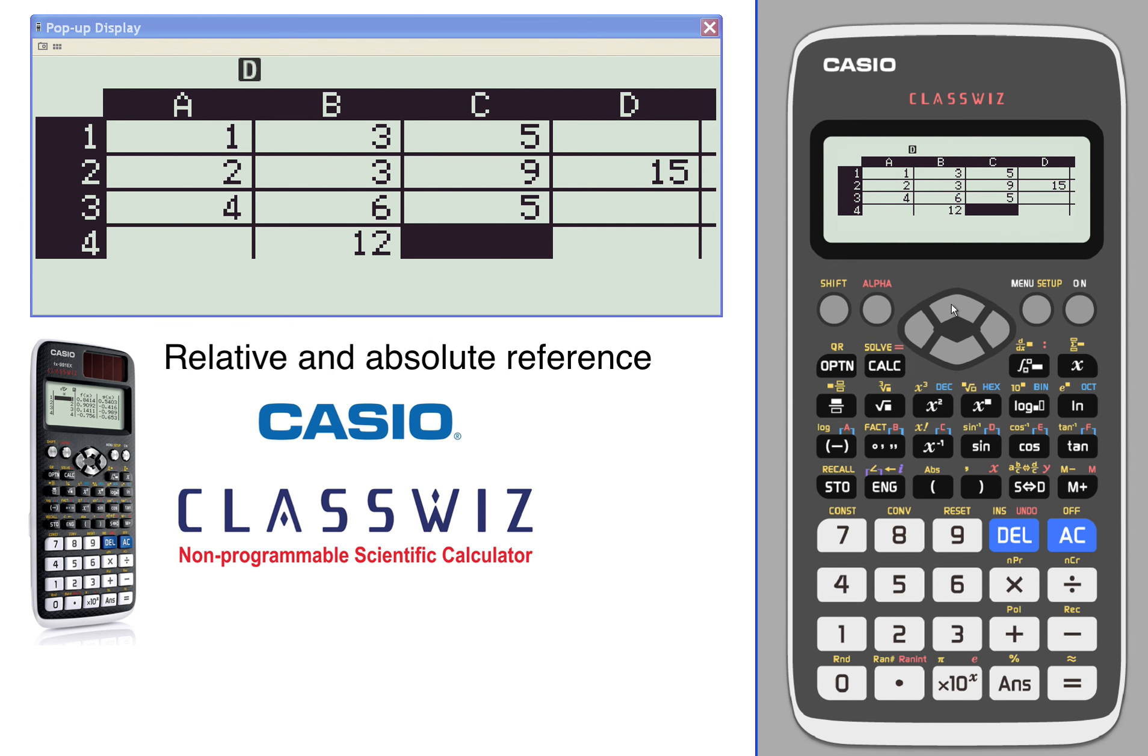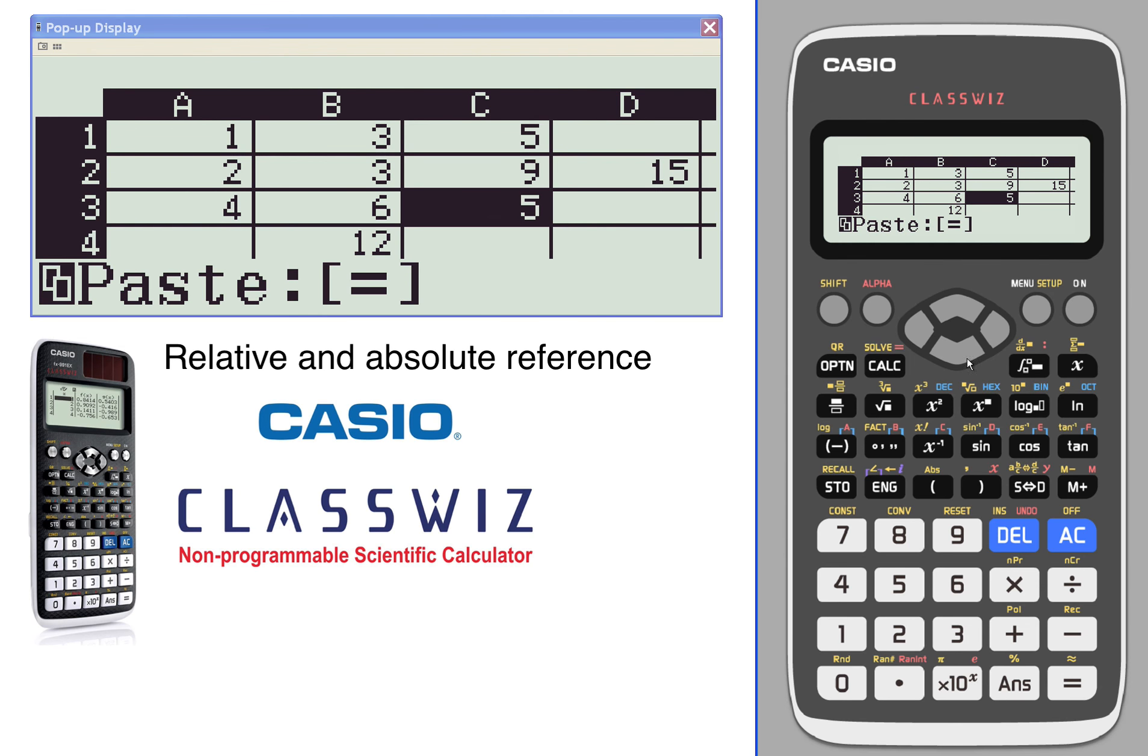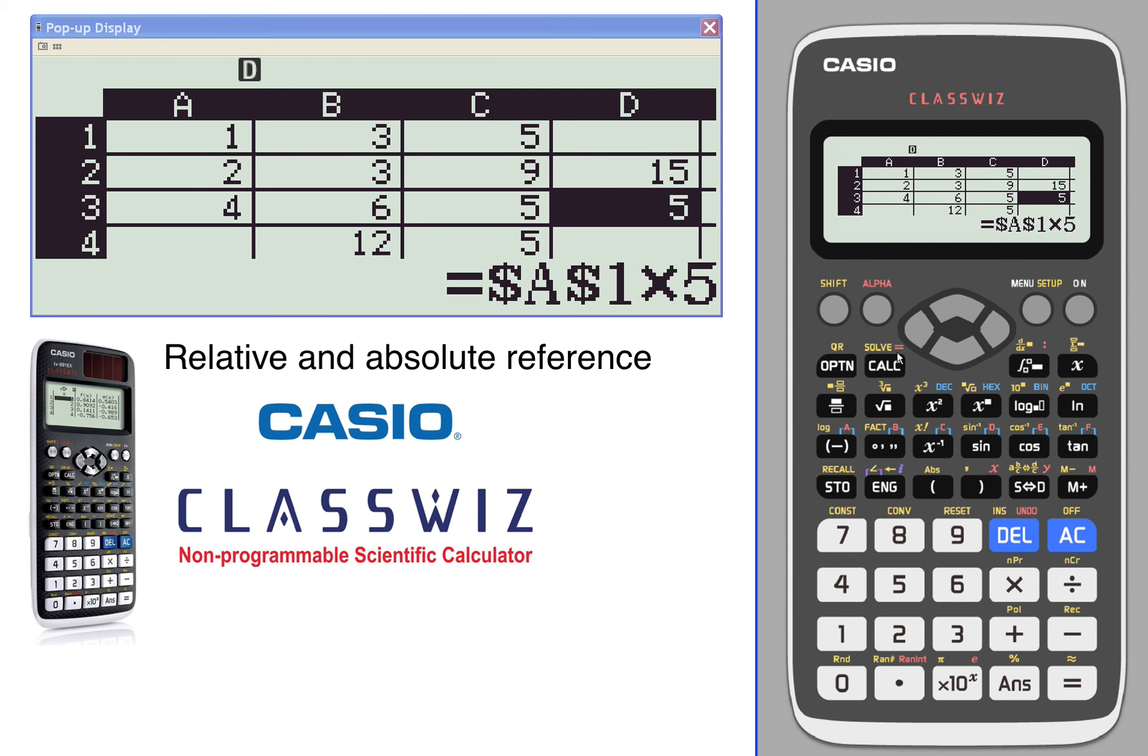It won't matter if we copy and paste it all we want - it's going to be absolute, always looking at that one cell. Let's try that again, we'll copy it and paste it underneath. We're gonna get the exact same answer no matter which way we go and try to copy and paste. So that's some absolute and relative references.